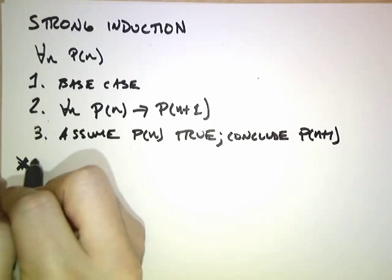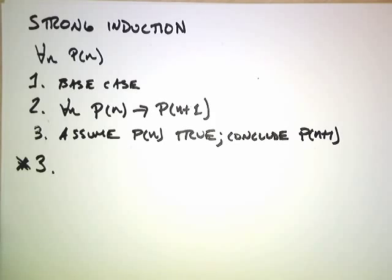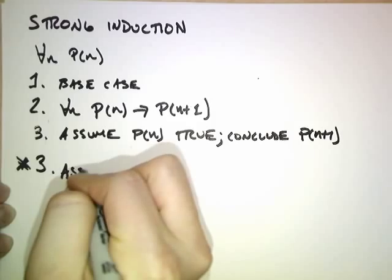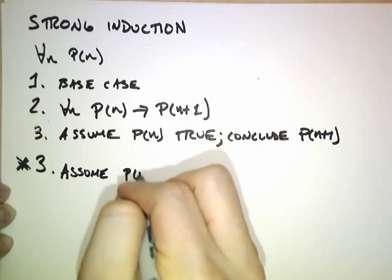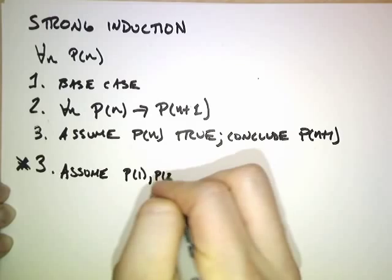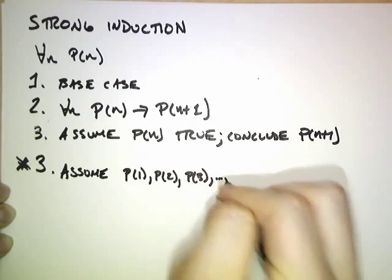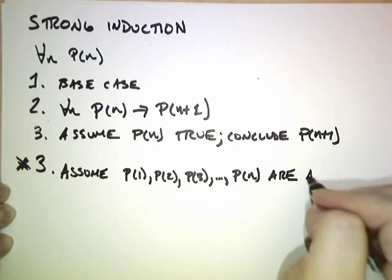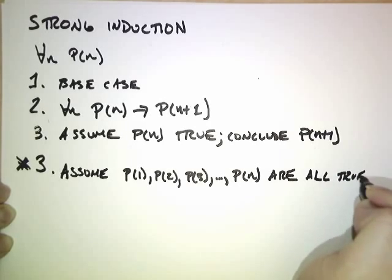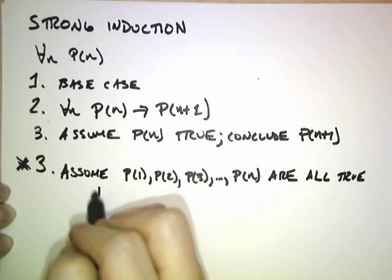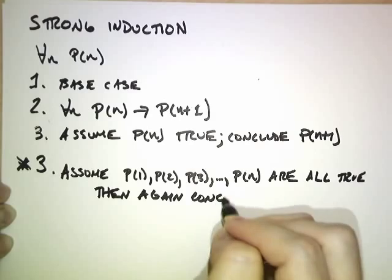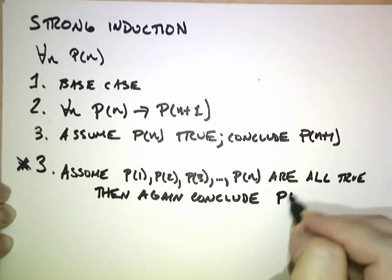In strong induction, you make the following alternate step. Instead of assuming p of n is true, you assume that p of 1, p of 2, p of 3, and so on, all the way up through p of n, are all true. And then, as before, you want to conclude p of n plus 1.